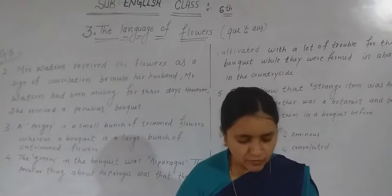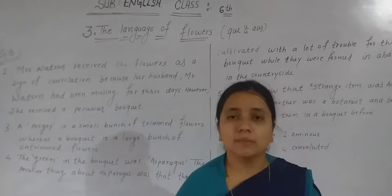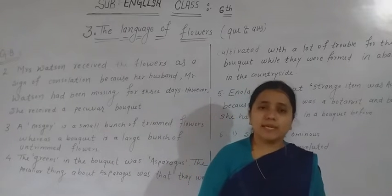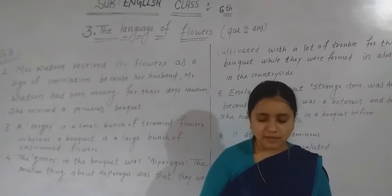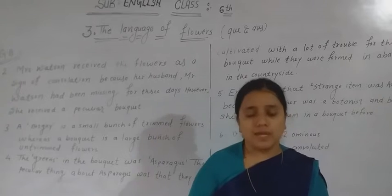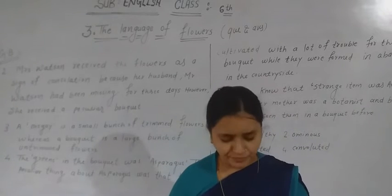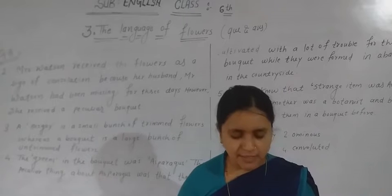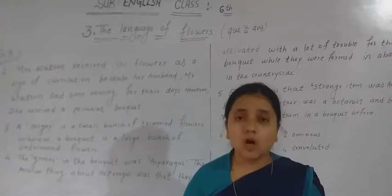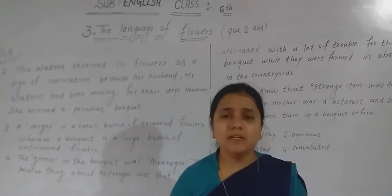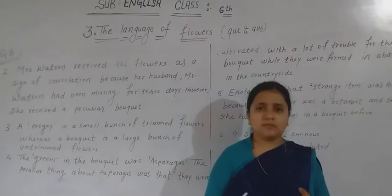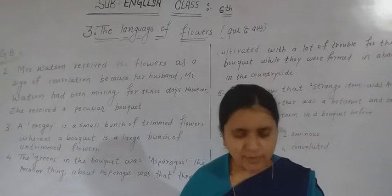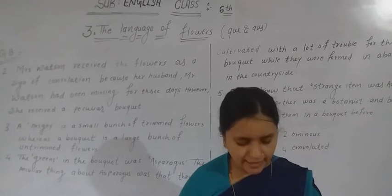The second question: which odd item was included in the bouquet? The correct answer is asparagus. Asparagus is not any flower — it is a tall plant of the lily family which is not normally used for a bouquet. So the correct answer for the second question is asparagus.